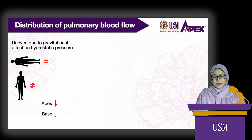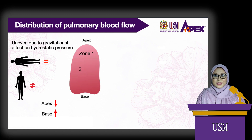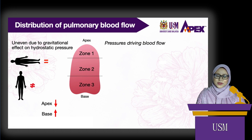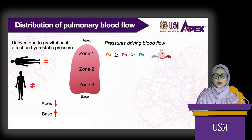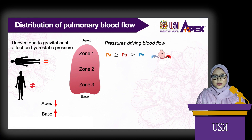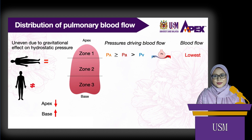In zone 1, because of gravity, arterial pressure may be lower than alveolar pressure. So the pulmonary capillaries will be compressed by the higher alveolar pressure. This compression will cause the capillaries to close, so blood flow is reduced. In zone 1, blood flow is the lowest compared to other zones.